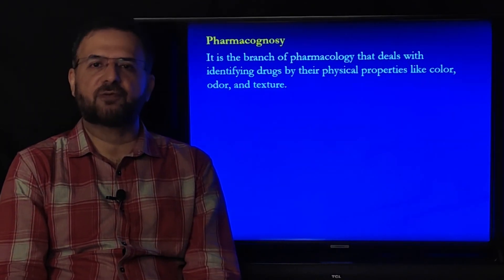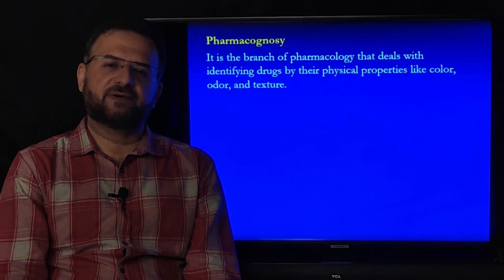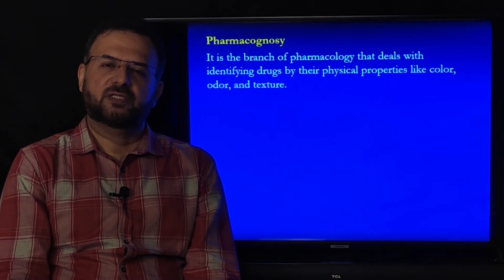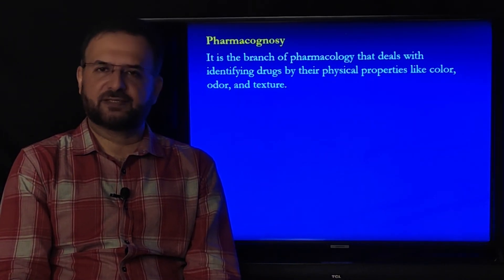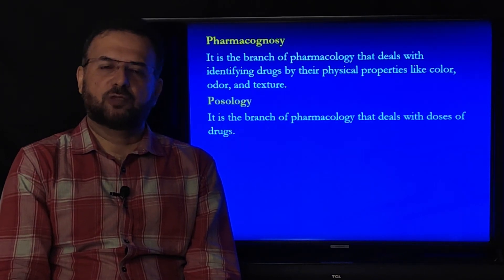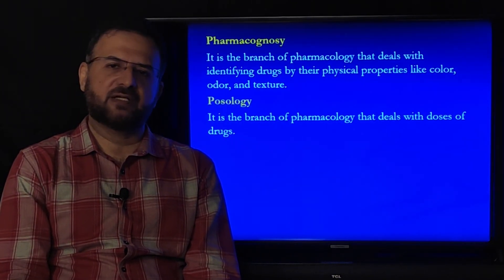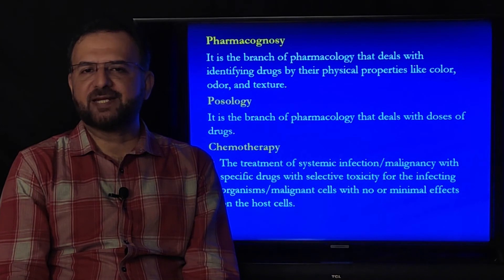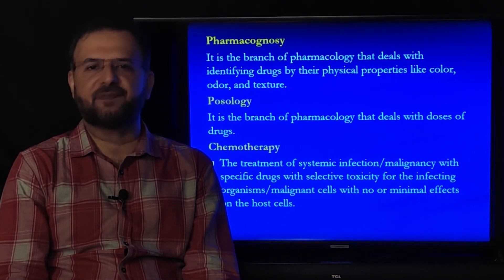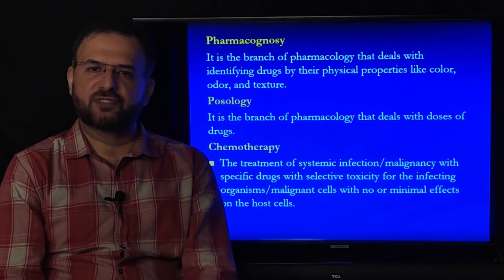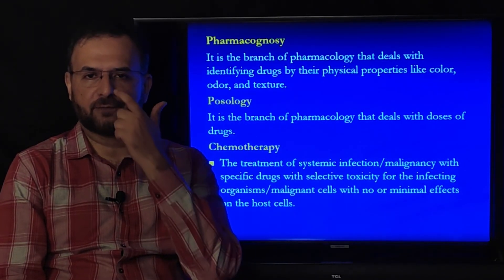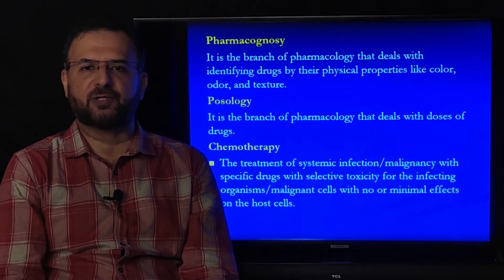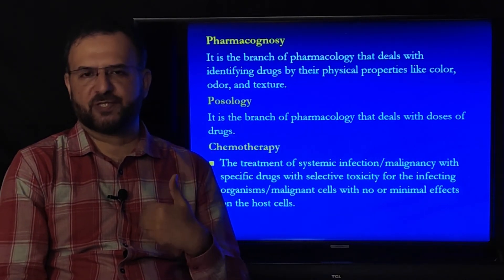Pharmacognosy is the branch of pharmacology that deals with identifying drugs by their physical properties like color, texture, odor, smell, etc. Posology is the branch of pharmacology that deals with the doses of drugs. Chemotherapy is the treatment of systemic infections and malignancy with specific drugs that have selective toxic effects — they can produce toxic effects on infecting organisms, malignant cells, or immature abnormal cells of the body with no or minimum destruction of normal cells.